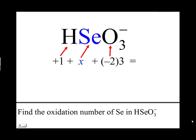Now write an equal sign. The sum of the oxidation numbers is equal to the total ionic charge written on the top right of the ion formula. The total ionic charge on this ion is negative 1.